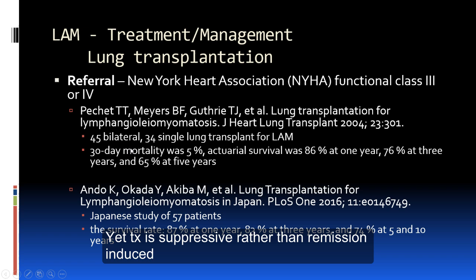Studies on lung transplantation for LAM include data on 45 bilateral and 34 single lung transplants, showing survival rates similar to the national survival rate for lung transplant for other diseases. One Japanese study included 57 patients. Because LAM can metastasize and persist in the body, it can recur after lung transplant. However, even with the chance of recurrence, lung transplantation may still improve survival compared to no transplant in patients with severe LAM lung disease.